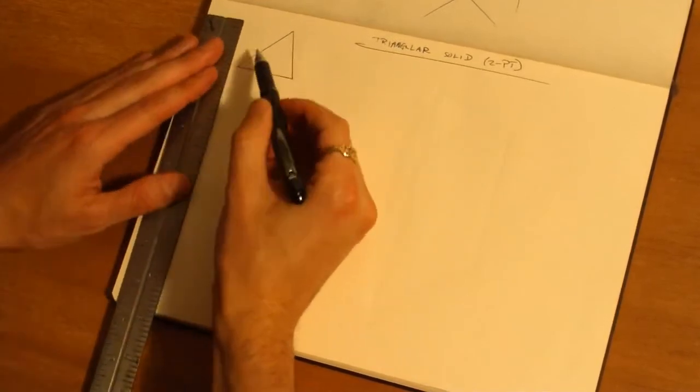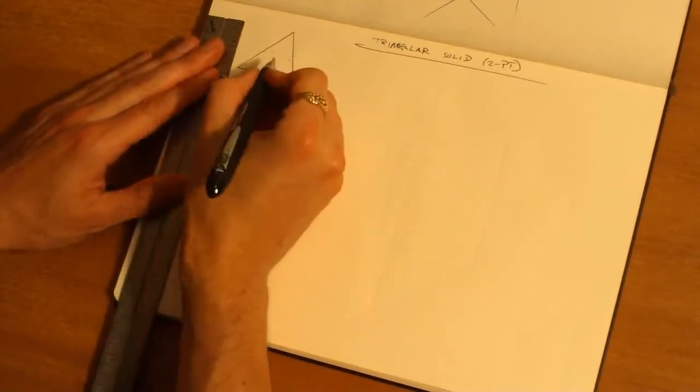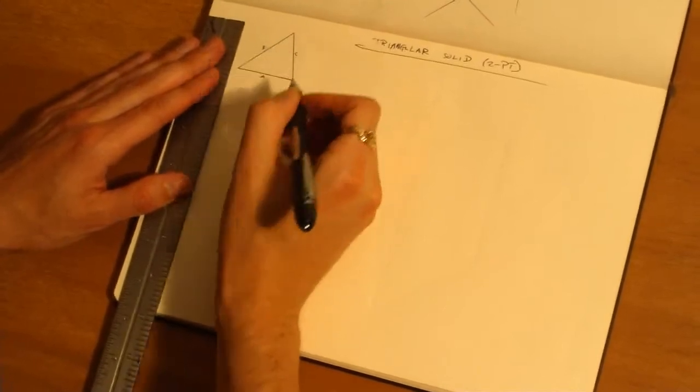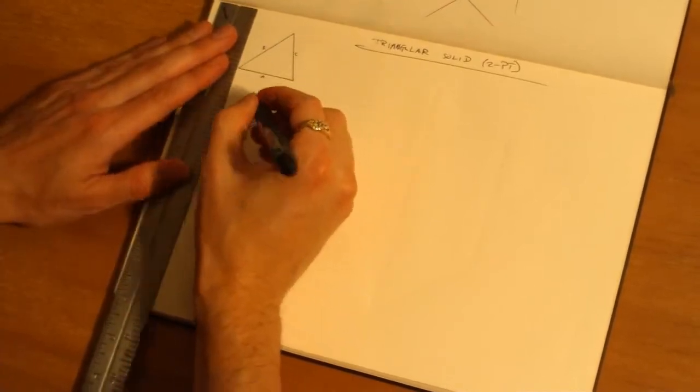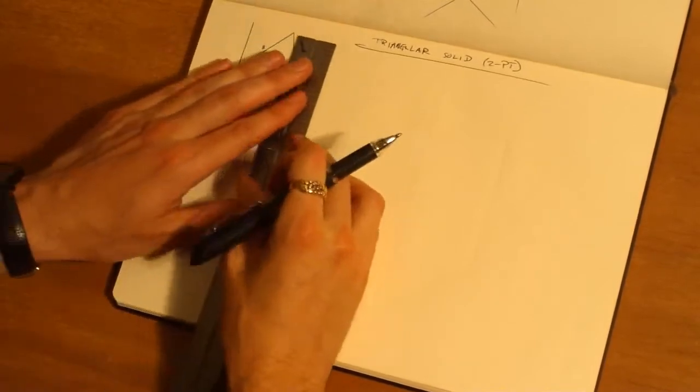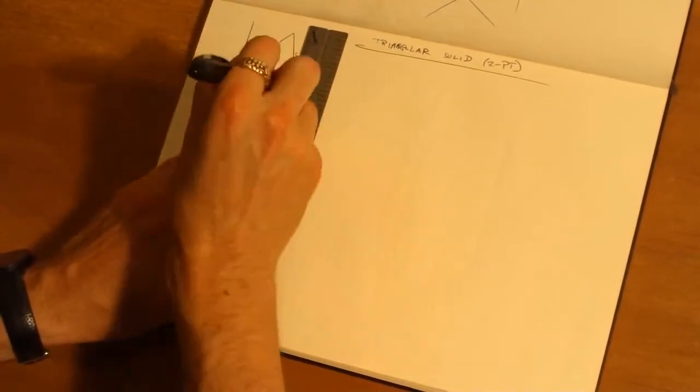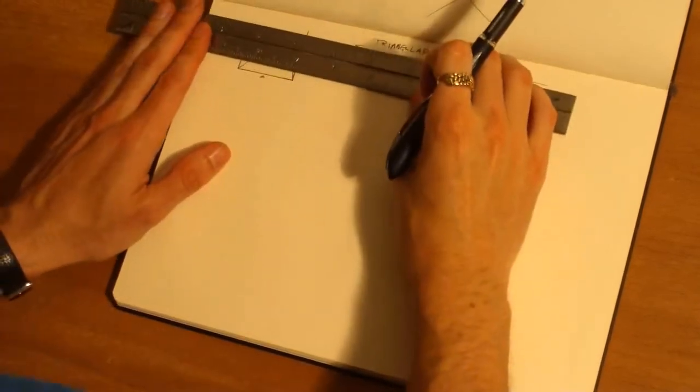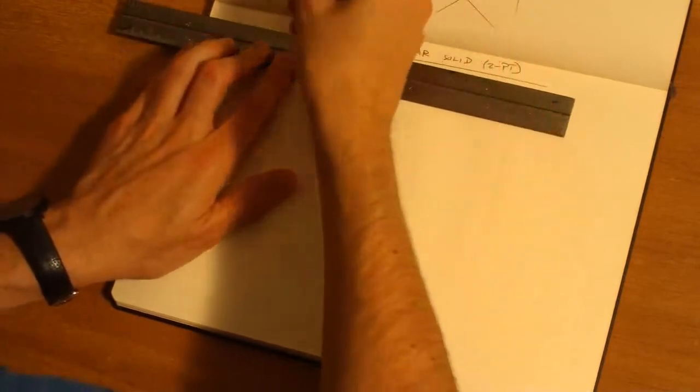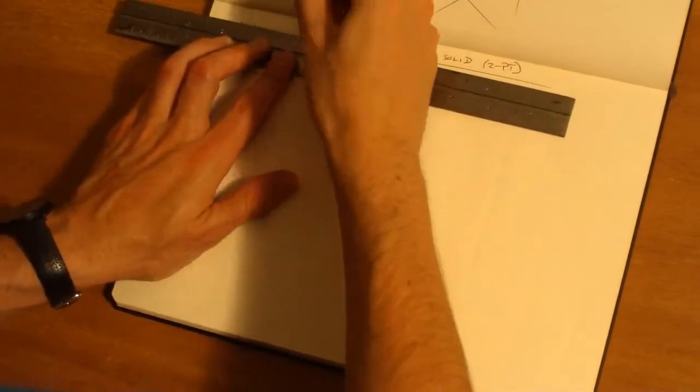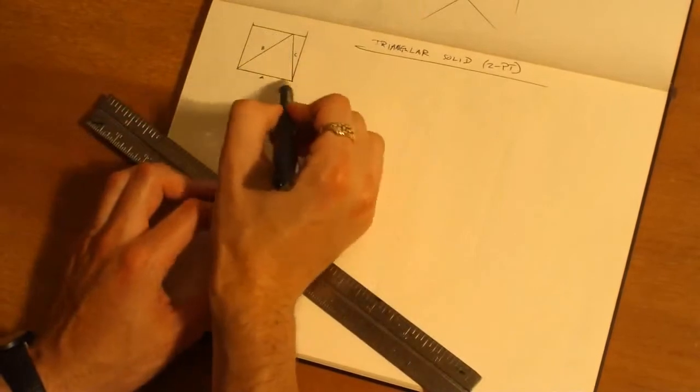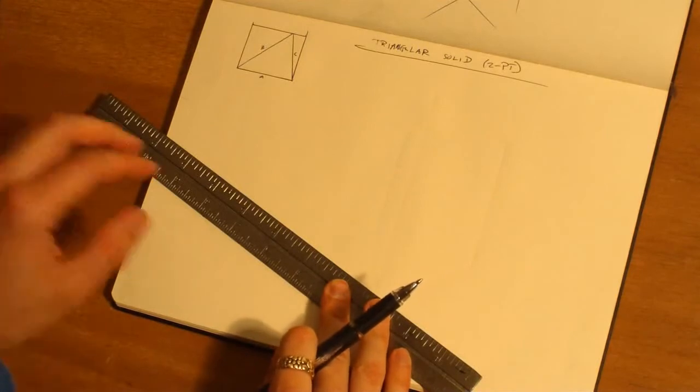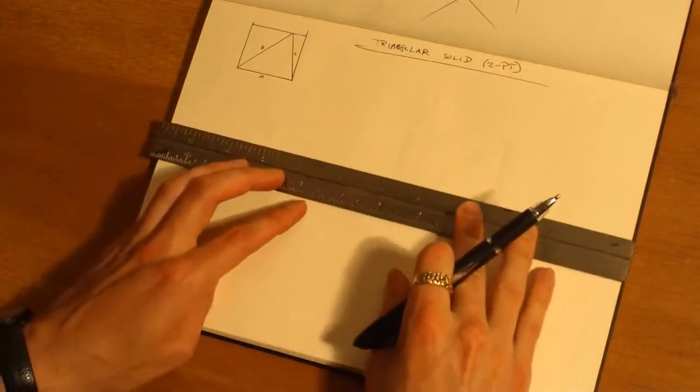So once you have the shape, you inscribe a rectangle around it. So you can pick any one of these sides - I'm gonna pick this side as side A, side B, and side C. So I'm gonna make a rectangle around this triangle using one of the edges as one edge of the rectangle.